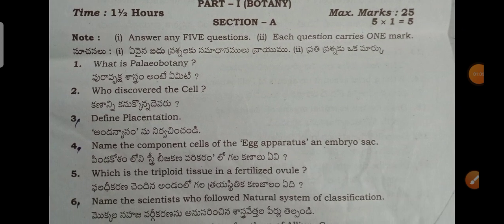Now, going through one by one — Section A carries marks. Actually Section A contains 8 questions, but due to corona you may have 10 questions. Out of 10 questions you have to attempt any 5. Section A contains very short answers.